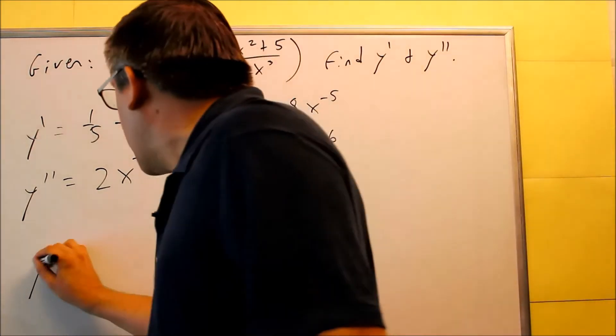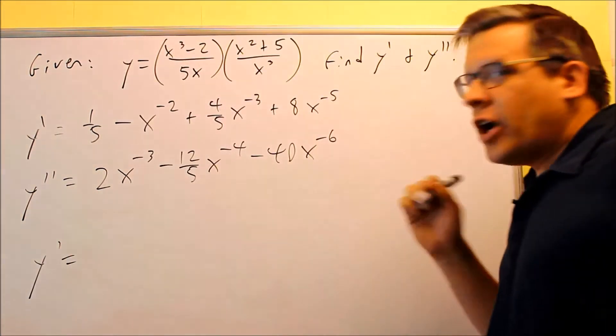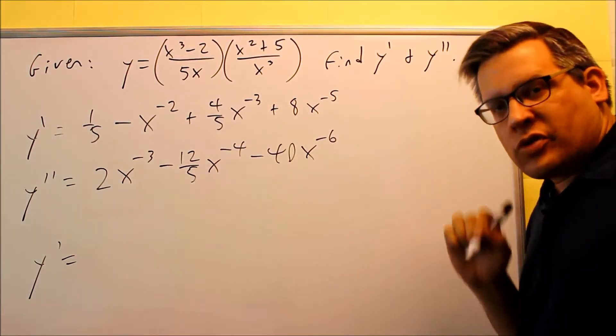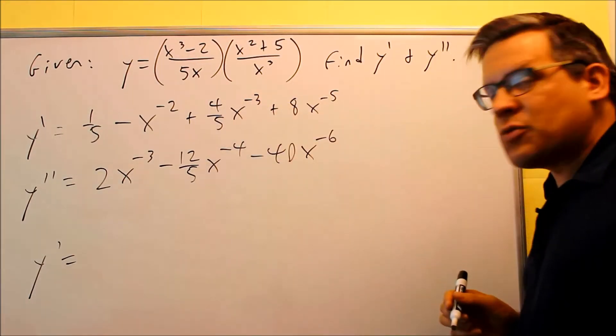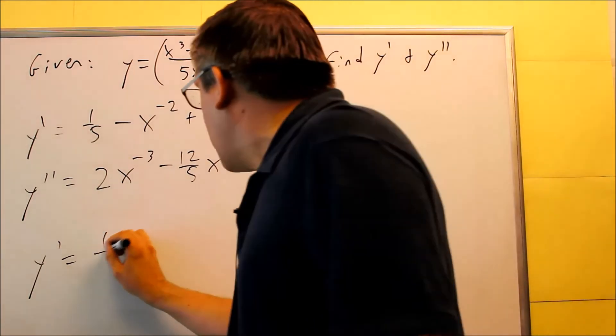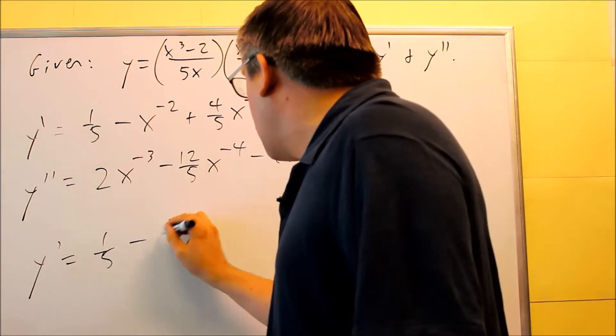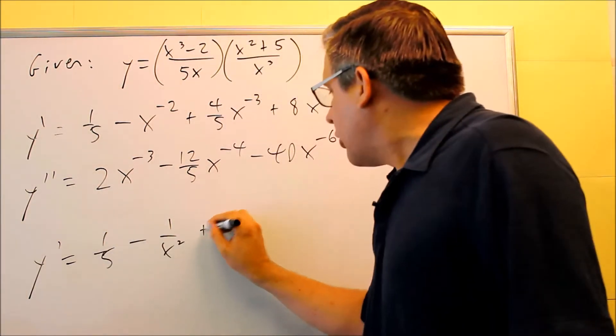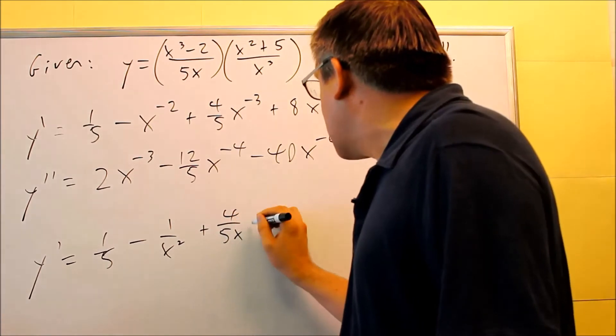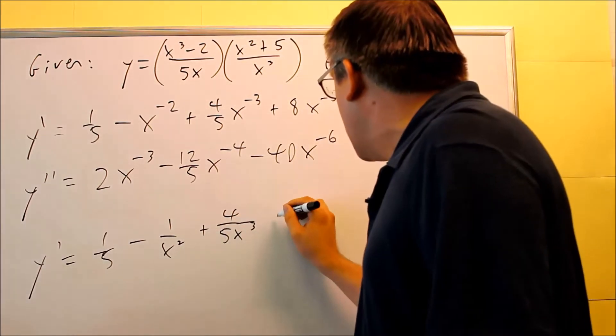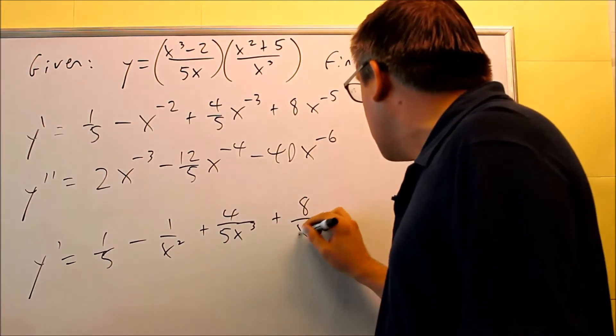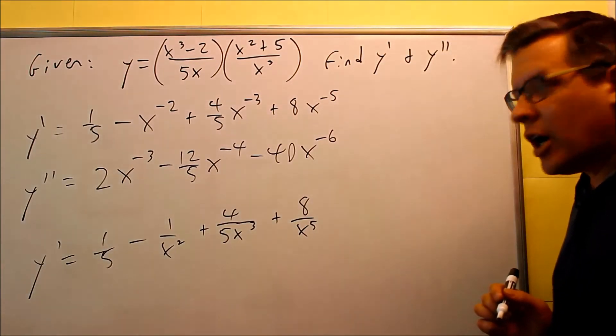We just have to clean up our answers and write them in the way that the online homework systems usually accept this without the negative exponents there. So for this one I have one fifth, I have minus 1 over x squared, plus 4 over 5x to the third, and then plus 8 over x to the fifth. That's your y primed.